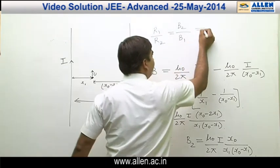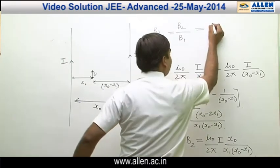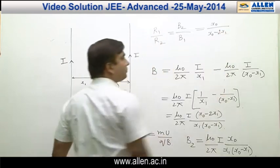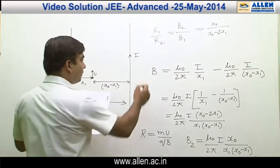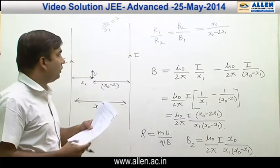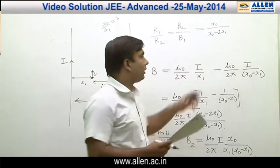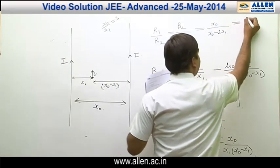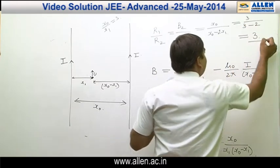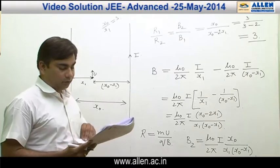Dividing B2 by B1, everything cancels out and we get x naught divided by x naught minus 2x1. The question says x naught by x1 has a value of 3. Dividing numerator and denominator by x1 gives x naught by x1 which is 3, divided by x naught by x1 minus 2, which is 3 minus 2, giving an answer of 3. Hence r1 by r2 comes out to be 3.